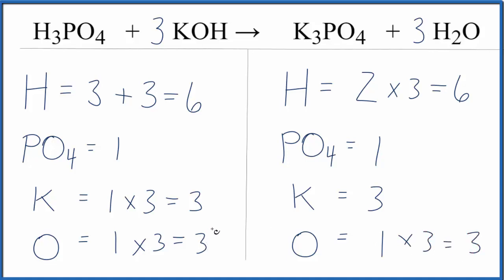So at this point, everything's the same on each side of the equation and we're done — it's balanced. This is Dr. B with the balanced equation for H3PO4 plus KOH yields K3PO4 plus H2O. Thanks for watching.